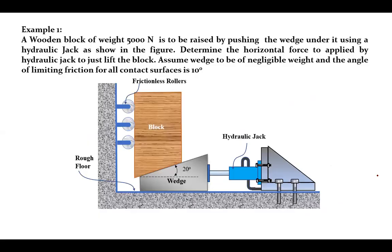Now let us get into the application problems of these wedges. First example: a wooden block of weight 5000 Newton is to be raised by pushing the wedges under it using a hydraulic jack as shown in the figure. This is the hydraulic jack and this is the block which has to be lifted. Determine the horizontal force to be applied by the hydraulic jack to just lift the block. Assume the wedge to be of negligible weight and the angle of limiting friction for all contact surfaces is equal to 10 degrees.